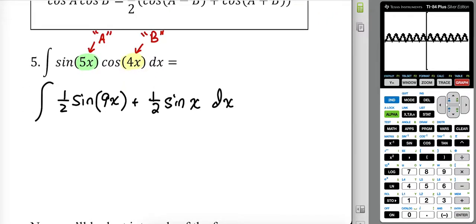Much easier to integrate. Maybe you would need to use u-substitution if you didn't use this technique, but this is very nice and easy to integrate now. The antiderivative of sine is negative cosine, so I'm going to have a negative, I'm going to have a one half, I'm going to have a reciprocal of the coefficient of x, so one ninth.